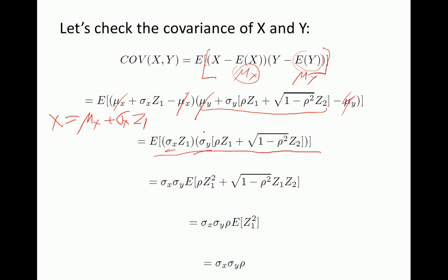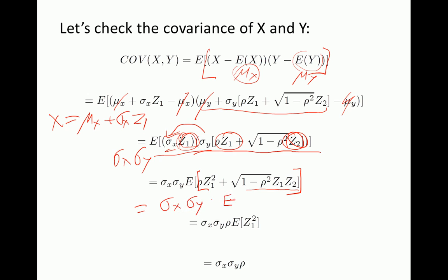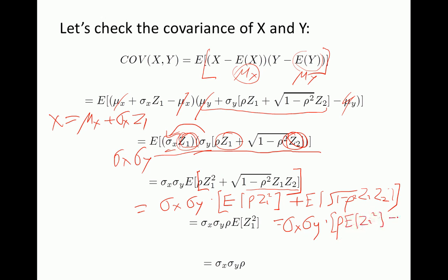Since sigma x and sigma y are constants, we take them outside the brackets. Inside we're left with rho times z1 squared — because we're multiplying z1 by z1 — plus the square root of (1 minus rho squared) times z1 times z2. This gives us sigma x times sigma y times the expectation of rho times z1 squared, plus the square root of (1 minus rho squared) times the expectation of z1 times z2.